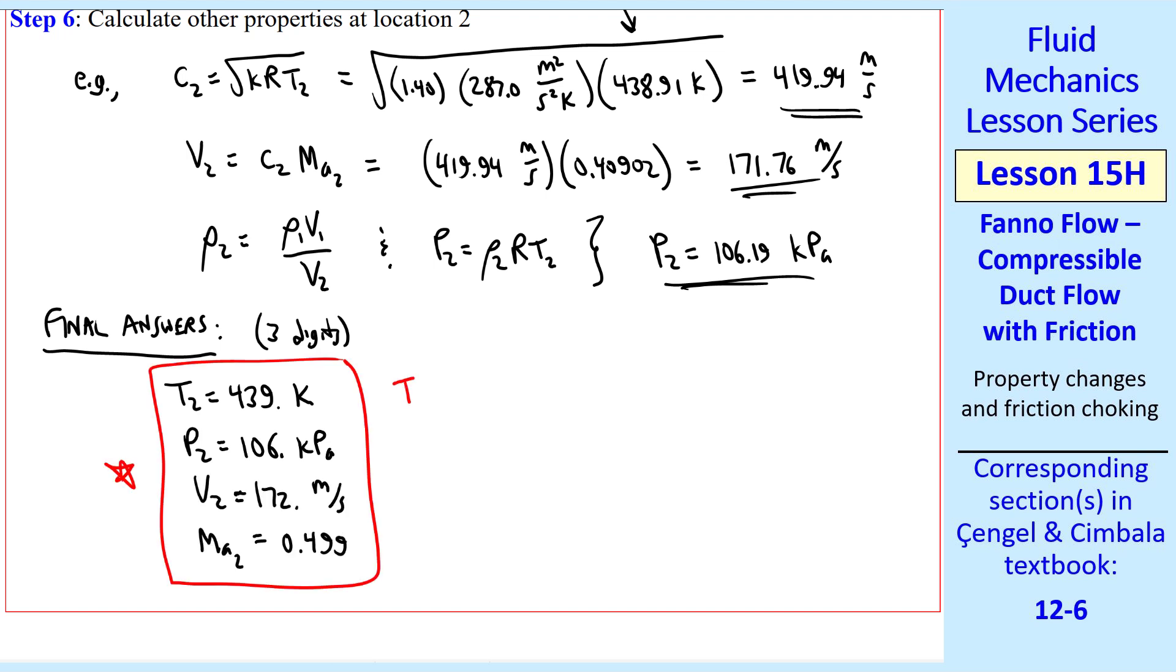Notice that as we said, since this is the subsonic branch, temperature has gone down. T1 was 450. Pressure has also gone down. P1 was 220 kPa. V has gone up. V1 was 85 meters per second. Mach number has gone up. The original Mach number was 0.2. This agrees with our Fanno curve, since we're on the subsonic branch. We've gone from 1 to 2 along the subsonic branch.